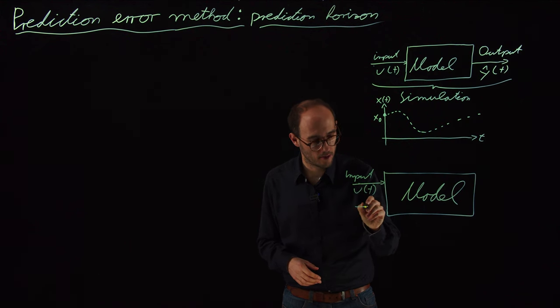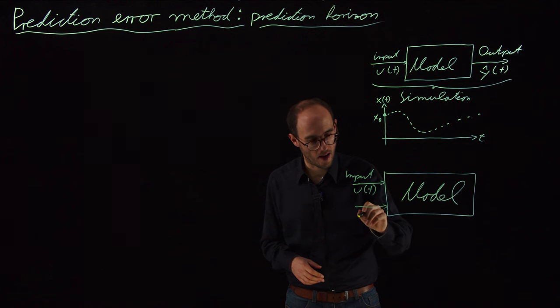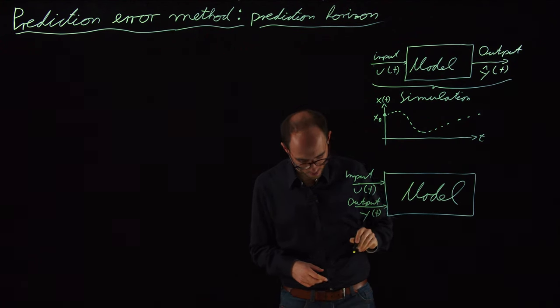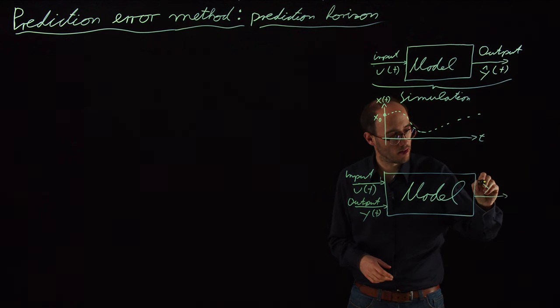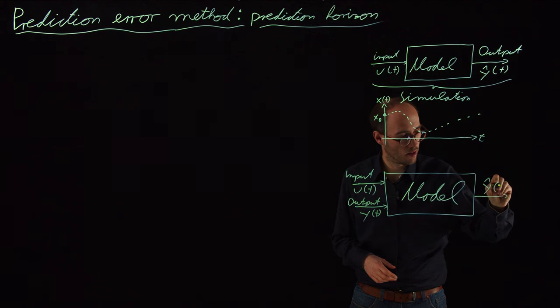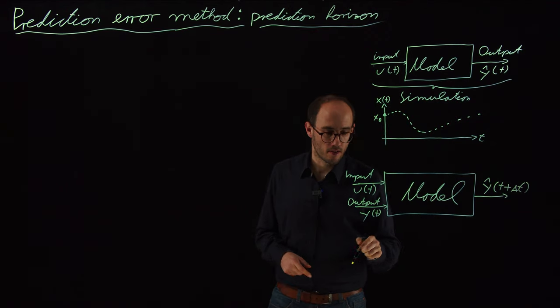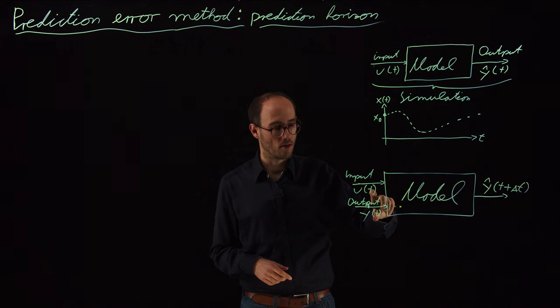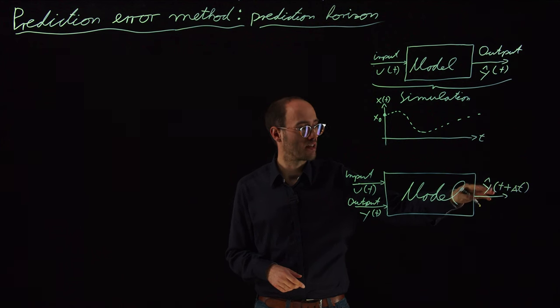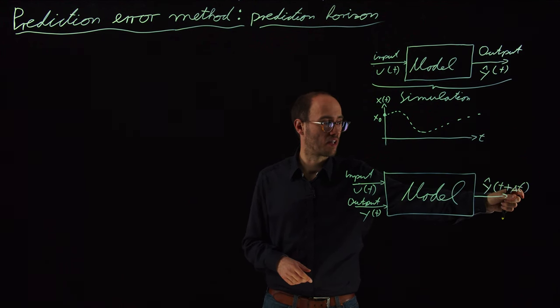But additionally, we assume that we also have access to the past outputs Y of T, and that our task is to basically predict Y hat of T plus delta T. The big difference here is we also have access to the old data, anything back in the past, and we should make a prediction about the future sufficiently well given this time step delta T.